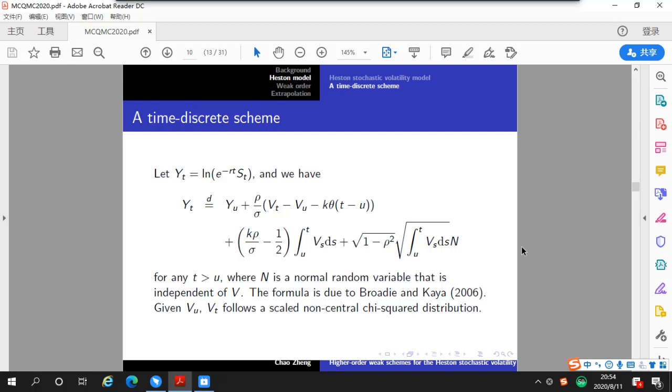So far, we have not talked about which scheme we apply. So, let Y be the log of S, and we have this equation where this symbol means equality in distribution. Here, N is a standard normal random variable that is independent of V. So, this implies that N is independent of this diffusion part. This formula is due to Broadie and Kaya.